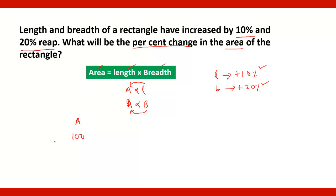We are taking 100 square units because calculating the percentage of 100 is very easy. There is no need to memorize any formula — we are solving all the questions without using any formula. So let the area be 100 square units. Now the length is increased by 10%, so 10% of 100 is 10 square units, giving a new area of 110 square units.